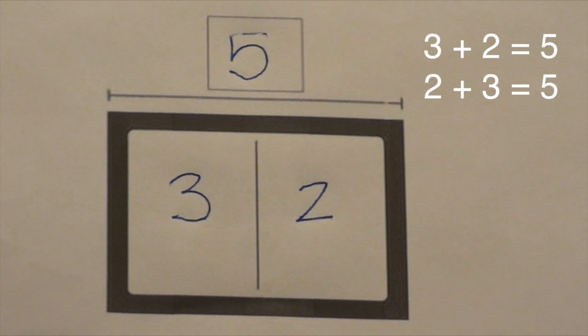Since addition and subtraction facts are related, we could also create two subtraction sentences. We have to start with the whole first — five — and then subtract one of the parts — three. The remaining part, two, is our answer. In subtraction we call it the difference.